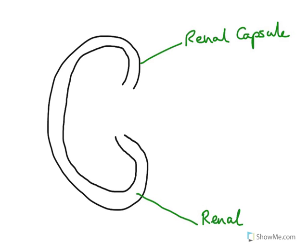Anytime you see the word renal, you know that you're talking about the kidneys. The renal cortex is the site of one of the two main jobs of the kidneys, which is filtration. The first process that happens in the kidney — the first process in our story — will be filtration, and that filtration process happens in this renal cortex here.